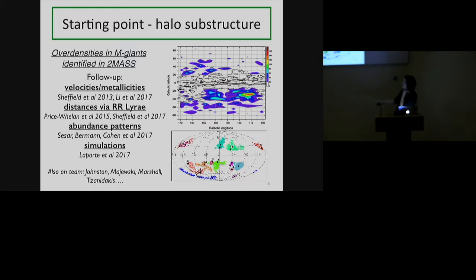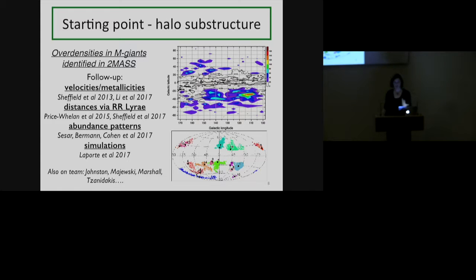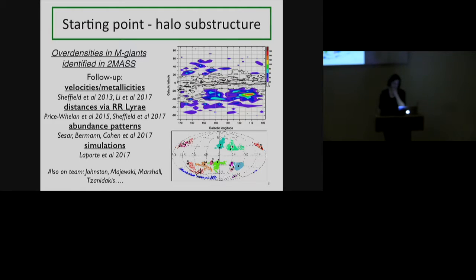So the first aim of the survey I started carrying out with Alison Sheffield was to understand this model better — to map these streams in various dimensions and try to constrain the model. The program involved looking at velocities and metallicities of the structures, both for TriAnd 1 and TriAnd 2 and more recently for A13. The second thing was to try to measure distances more accurately, since the distances we had were not very accurate. To do that we tried to find a special class of stars called RR Lyrae stars, which can be used as very accurate distance indicators.